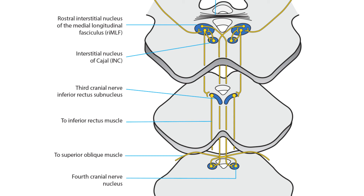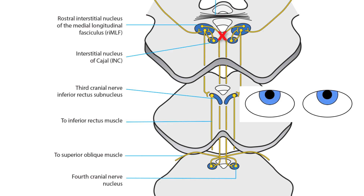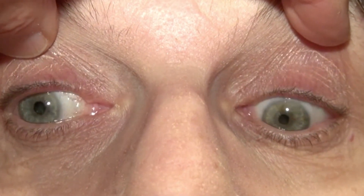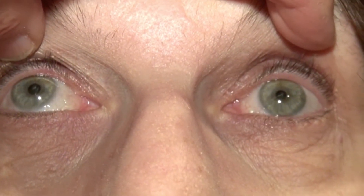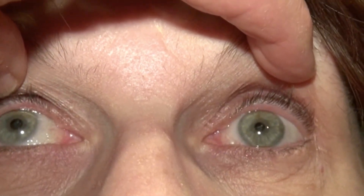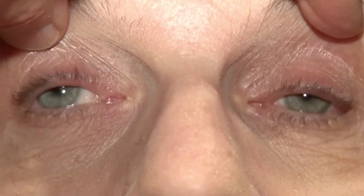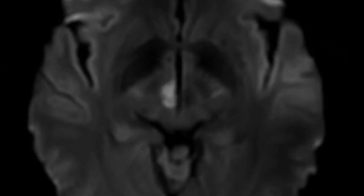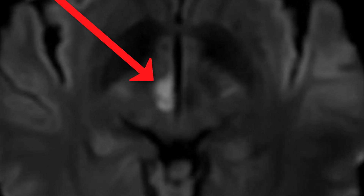Selective damage to the tegmental midbrain disrupts downward saccades and may even cause upgaze deviation. This patient can move her eyes properly from side to side and can also move them upward, but when she attempts to move them downward, the eyes move slowly and incompletely. This is downgaze paresis caused by a lesion in the tegmentum of the midbrain — she suffered a stroke.